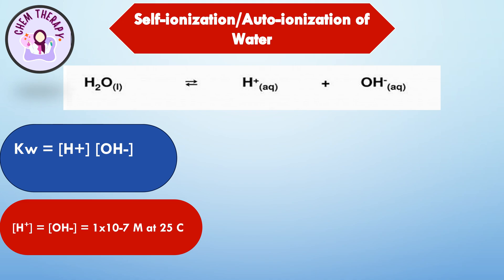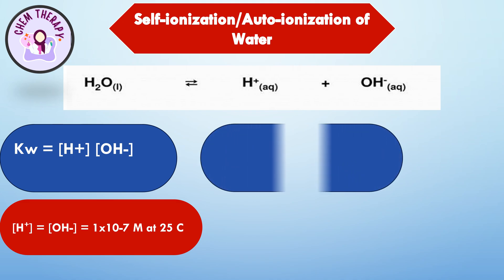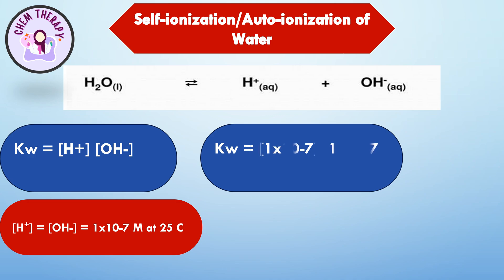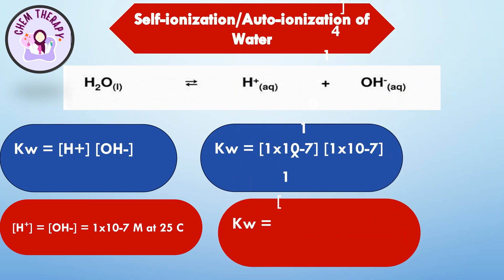Since the concentration of both hydrogen ions and hydroxyl ions equals 1×10⁻⁷ molar at 25°C, putting these values into the Kw expression gives us Kw = 1×10⁻¹⁴ at 25°C.